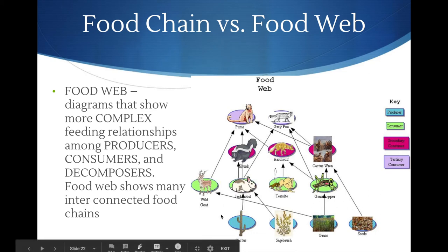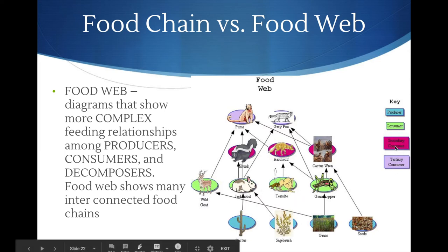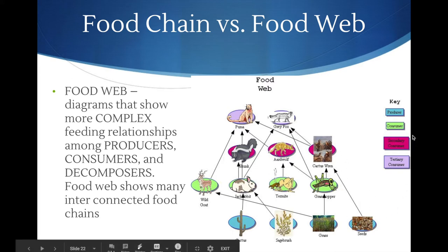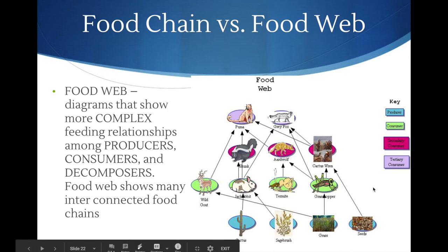A food web is more complicated. You always have plants — producers — at the bottom, then the herbivores that eat those producers, then omnivores and carnivores above them. Primary consumers, shown in green, are those that eat plants. Secondary consumers, in the pink box — your skunk, aardwolf, and cactus wren — eat consumers that eat plants. Tertiary consumers, with the purple background, eat consumers that eat consumers that eat plants.